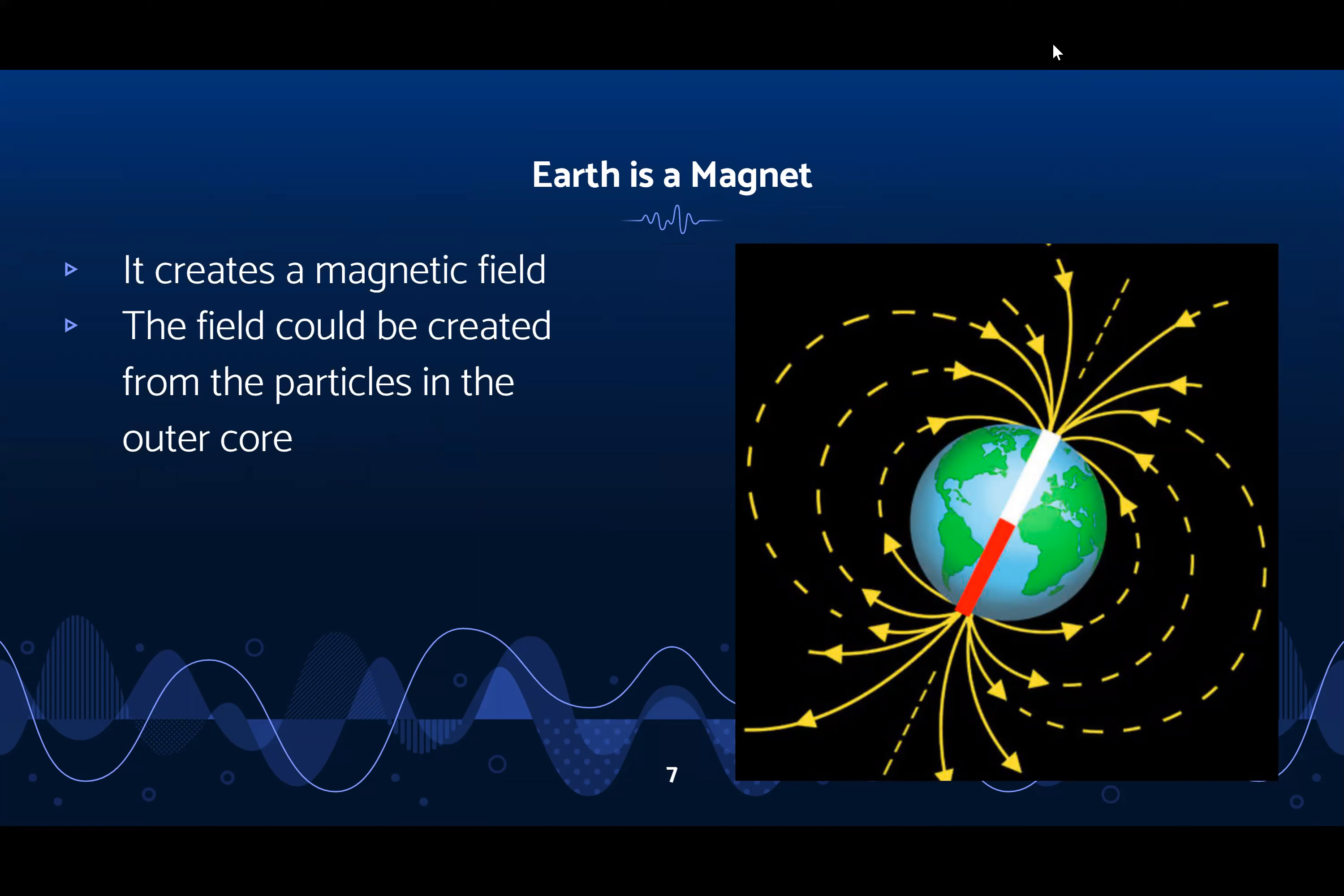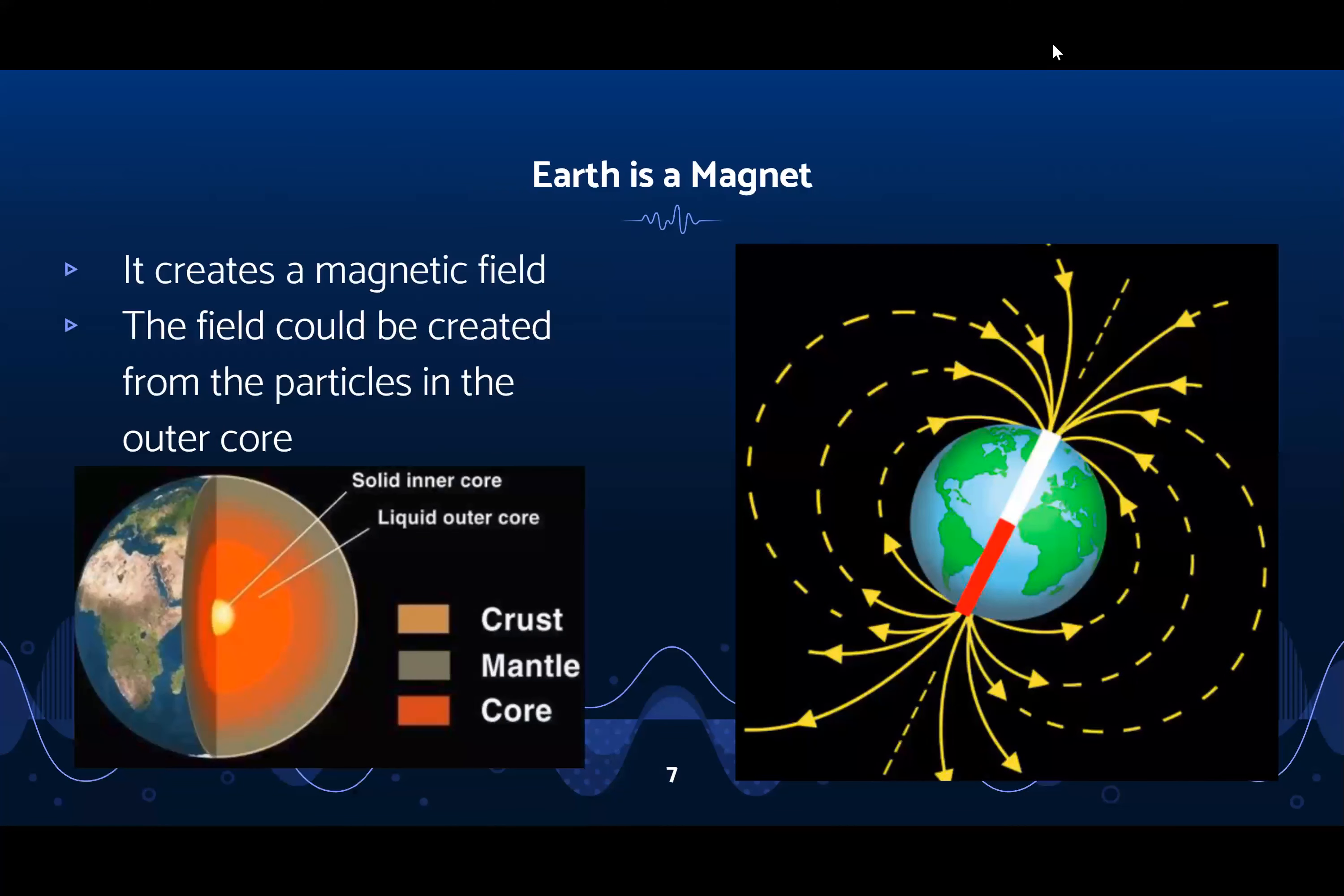Scientists hypothesize earth is a magnetic field because earth has an inner and outer core, and that the outer core consists of these liquid metals which are iron and nickel. So when earth's magnetic field is generated, it's generated by the movement of these charged particles that move through the molten metals in the outer core, and these particles move as earth spins on its axis.